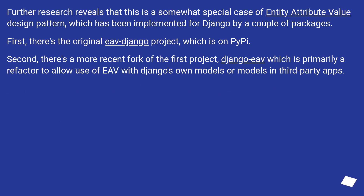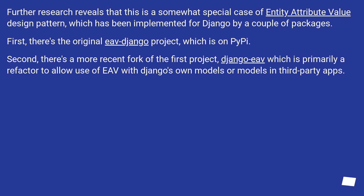Further research reveals that this is a somewhat special case of the entity-attribute-value design pattern, which has been implemented for Django by a couple of packages. First, there's the original EVE Django project, which is on PyPI. Second, there's a more recent fork of the first project, Django EVE, which is primarily a refactor to allow use of EVE with Django's own models or models in third-party apps.